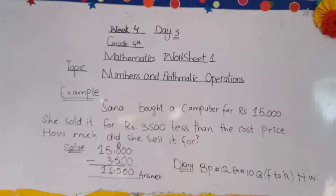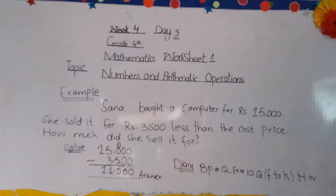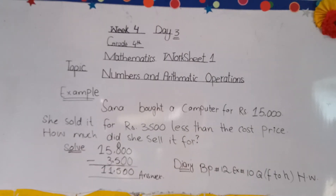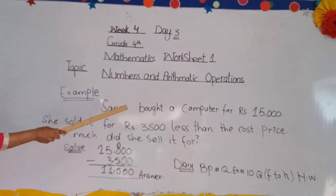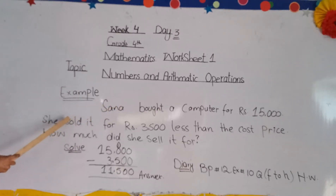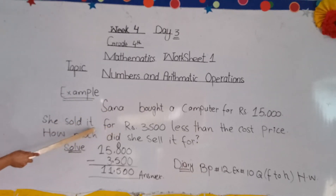Example: Sana bought a computer for a price of fifteen thousand. She sold it for a price 3,500 less than the cost price. How much did she sell it for? Students, we have already learned that to solve our problems we need to look at the information given. Given information: computer price is fifteen thousand, and she sold it for 3,500 less than cost price.